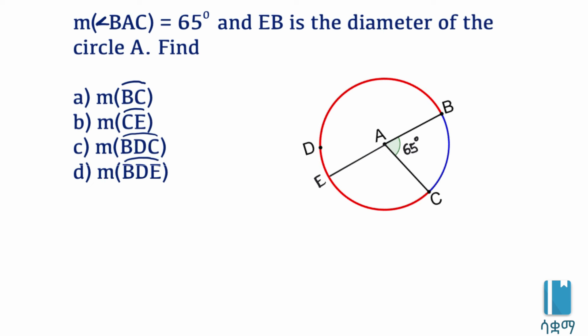The measure of angle BAC is 65 degrees, and EB is the diameter of circle A, with the vertex at the center of the circle. Find the measure of arc BC, the measure of arc CE, the measure of arc BDC, and the measure of arc BDE. The measure of arc BC...